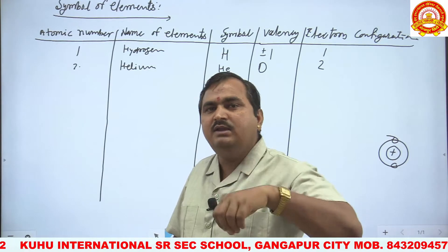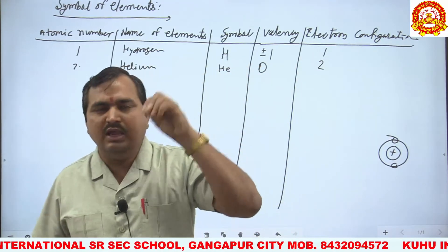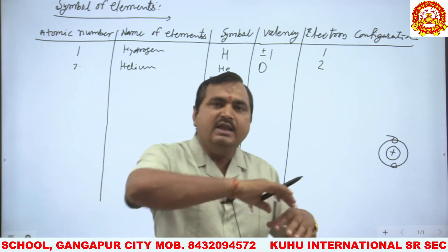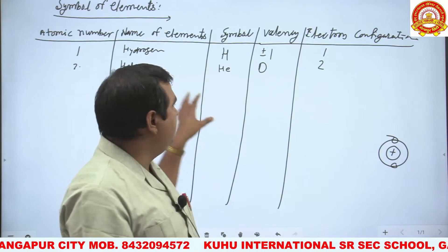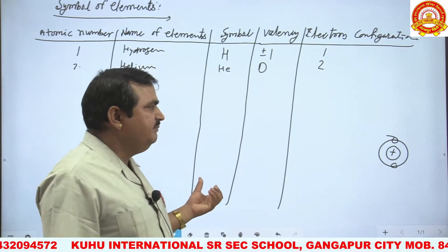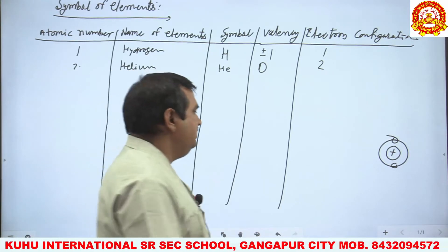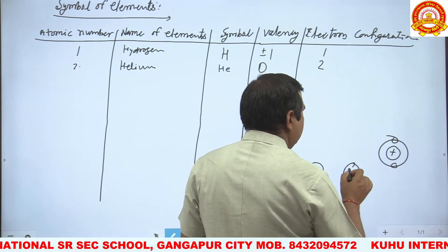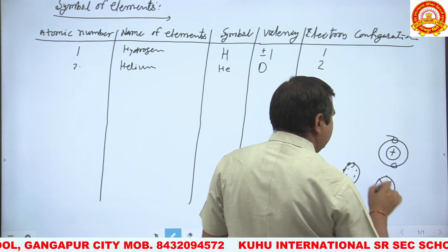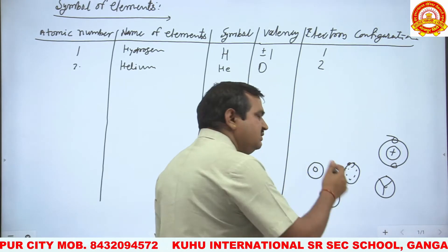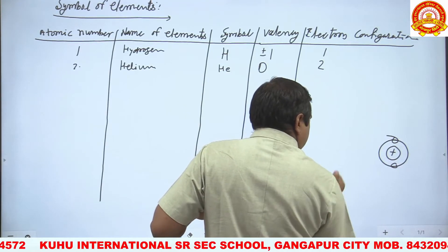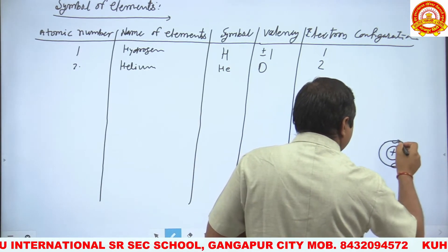According to Dalton, symbols were pictorial — for example, oxygen had one symbol drawn as a circle, mercury had another drawn shape. These Dalton symbols are not authentic today. Symbols in modern use originate from English or Latin names of elements. According to Berzelius, symbols are taken from English or Latin words.